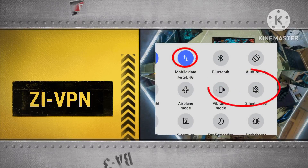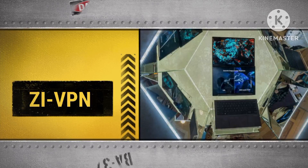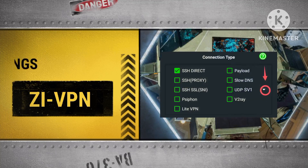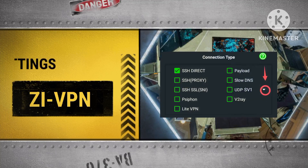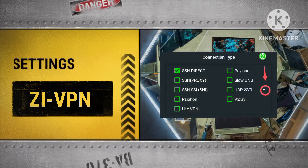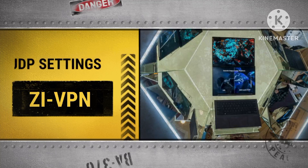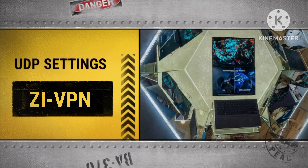Step 4: Loading UDP Servers. Long press on the arrowhead icon located within the ZI-VPN app. This will initiate the process of loading the available UDP servers.